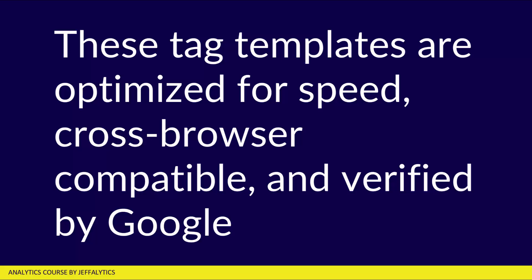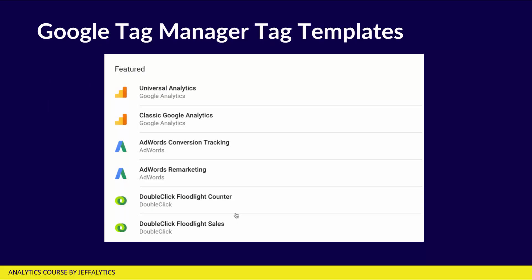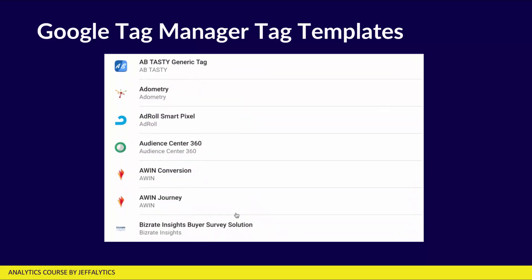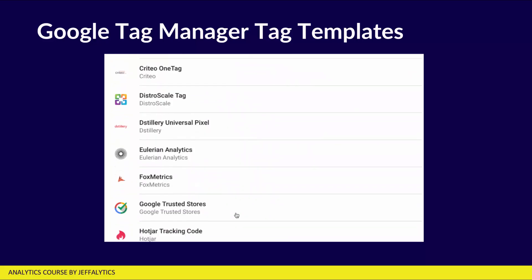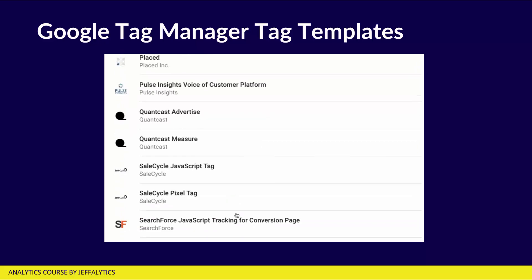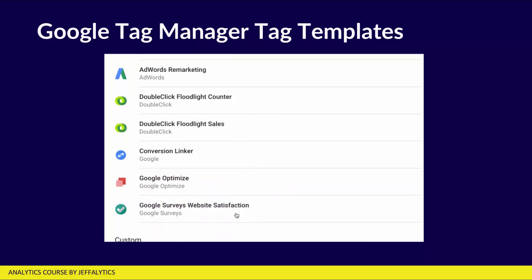These tag templates are optimized for speed, cross-browser compatibility, and they're verified by Google. In order to become a tag template vendor, you need to pass a rigorous test by Google to verify you're capable of being part of the system. These tags are always up to date and don't require significant maintenance. If you go into Google Tag Manager right now, you can see tons of tag templates available — there are so many that I had to use an animated GIF to show you everything. I'm scrolling through it pretty fast, but you can probably see several systems you've used, like LinkedIn and Bing Ads.